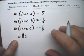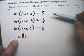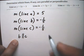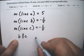And now these two are negative reciprocals. So line A and line B are perpendicular.